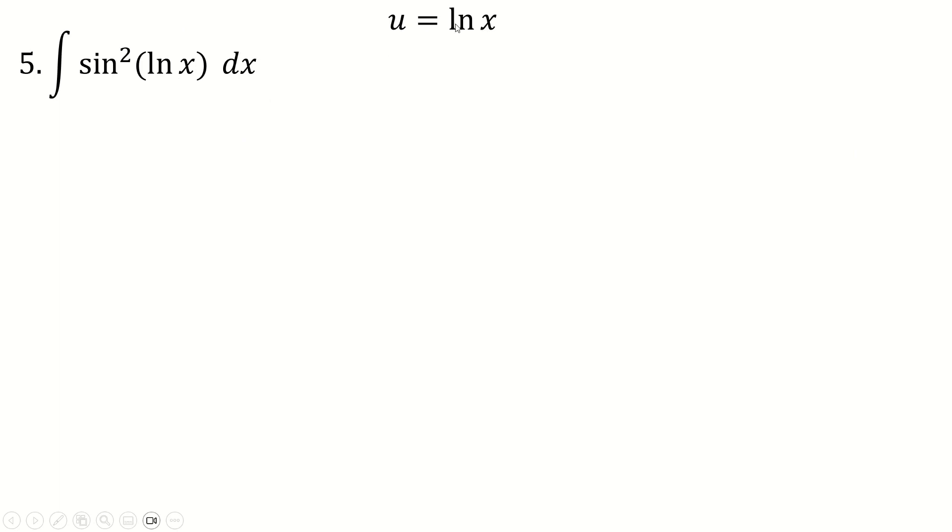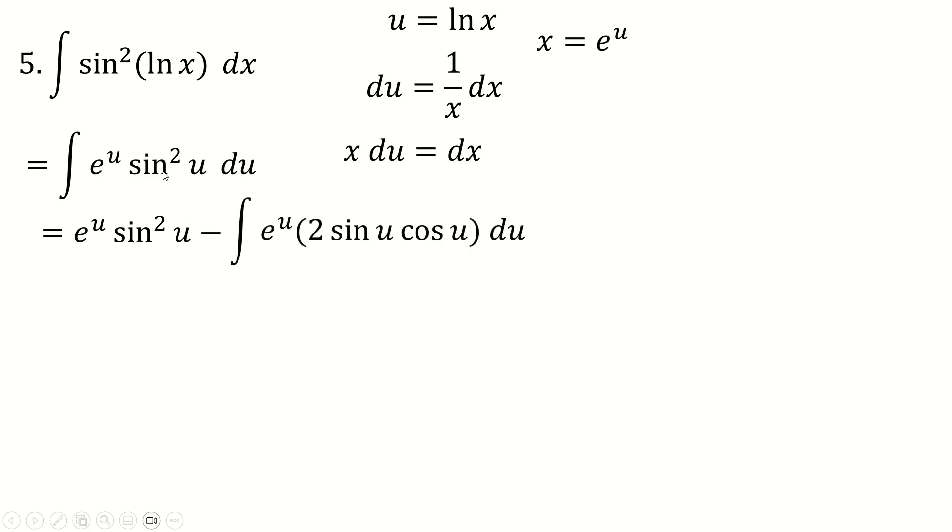I also thought a substitution of u equals log x would probably go pretty well here. So that's what I just did. This is not linear. So du equals 1/x dx, I guess, is how we'll differentiate that. Move the x over here. x itself is e^u. And we have our substitution all done. So we'll replace dx with e^u du. And it will look like this. This again looks to me like it's doable with integration by parts. So that's what I did.